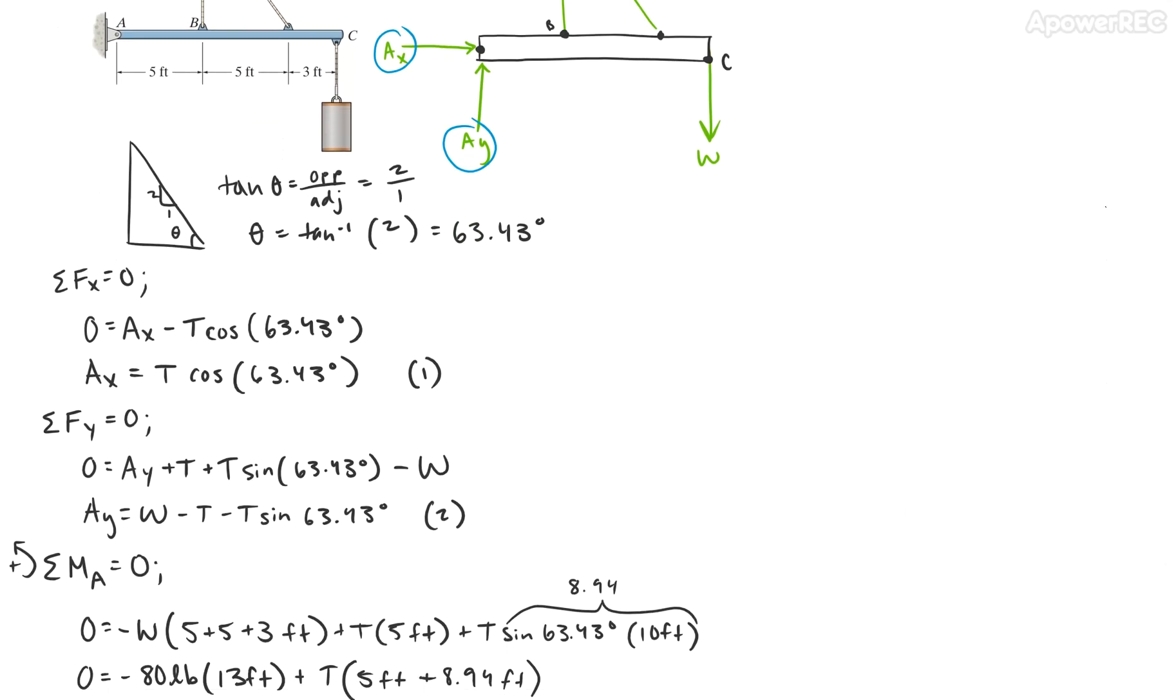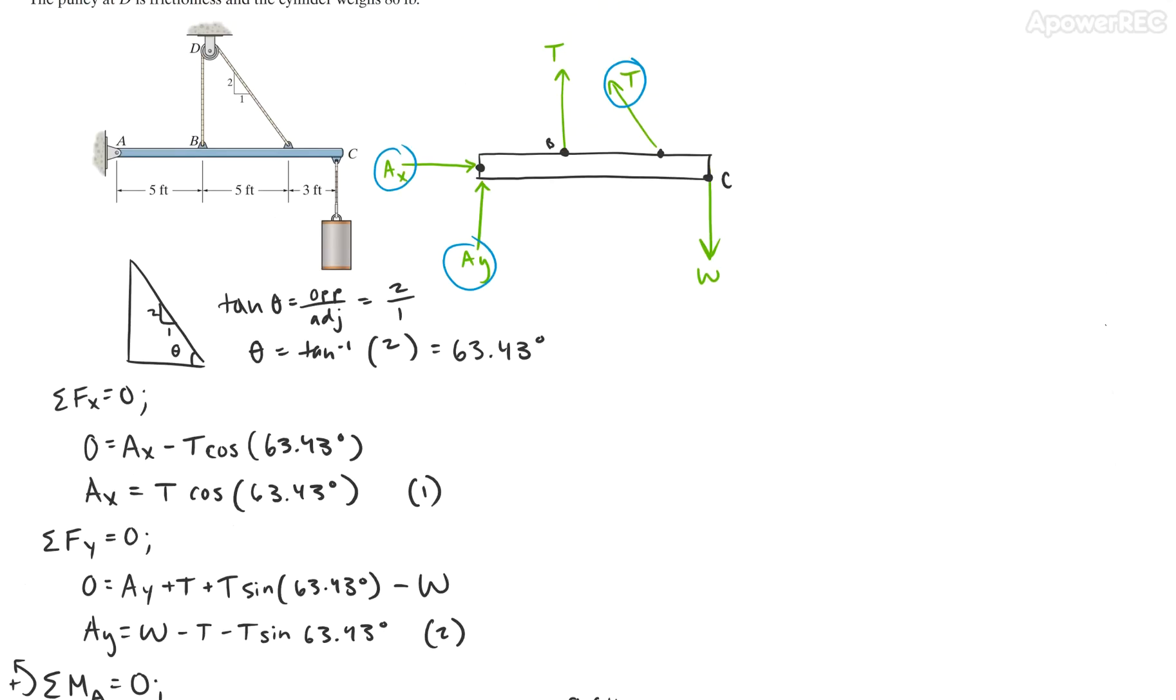So what we can do to make this problem easier is to take this triangle up here and figure out what that theta is for that angle. We can do this by taking tangent of theta equal to the opposite over the adjacent value, which is going to be 2 over 1. If you take the inverse, then we get 63.43 degrees.